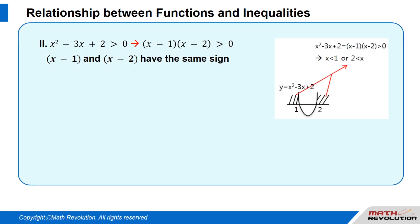Case 2: x squared minus 3x plus 2 is greater than 0. We are looking for x squared minus 3x plus 2 is greater than 0, which can be factorized as (x minus 1)(x minus 2) is greater than 0.